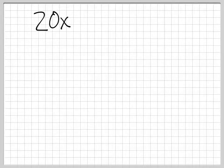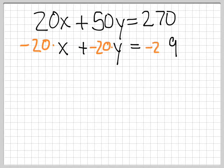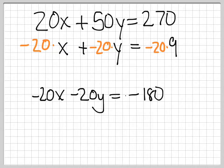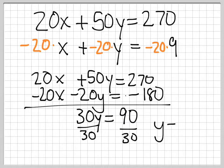Rewriting, we have 20x plus 50y equals 270. We also have x plus y equals 9. And so I'm going to multiply the bottom equation by negative 20, so my x's cancel. And so the bottom equation becomes negative 20x minus 20y equals negative 180. We have 20x plus 50y equals 270. When we combine these, we get 30y equals 90. Dividing both sides by 30, we get that y equals 3. That wasn't so hard.